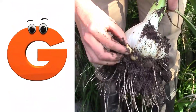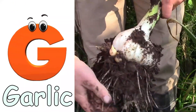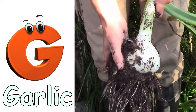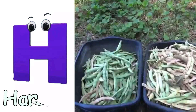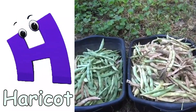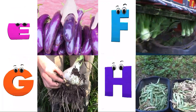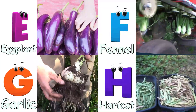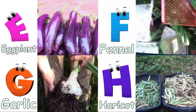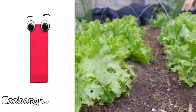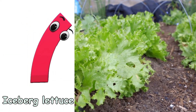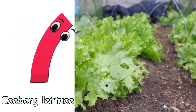G is for garlic. Garlic. H is for haricot. Haricot. I is for iceberg lettuce. Iceberg lettuce.